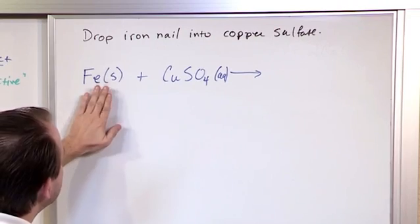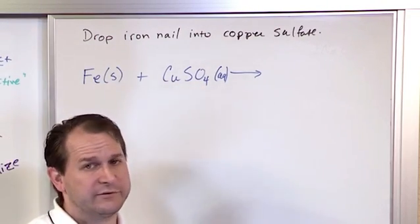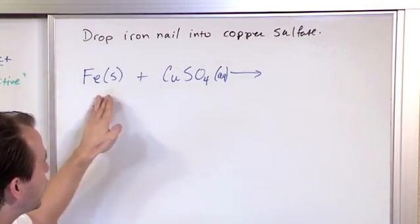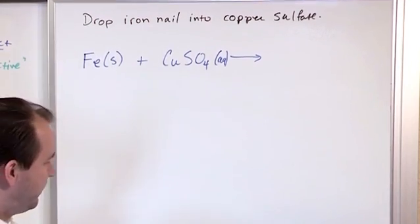Iron wants to lose its electrons more. So here we have iron. Iron wants to lose its electrons. Copper also wants to lose its electrons. It's a metal as well, but iron wants to lose them more badly.